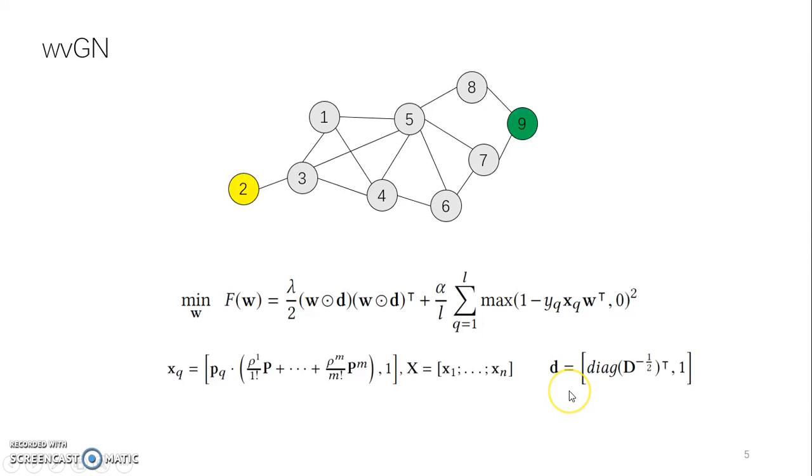Note that in semi-supervised learning scenario, the number of labeled vertices is scarce. In this example network, we cannot directly use the weighted vote strategy to determine the label of vertex 5. Our method accumulates the neighborhood information from one-hop to m-hop neighbors and denotes the representation of the vertex in vector space by x. Now our objective function is in this formula.